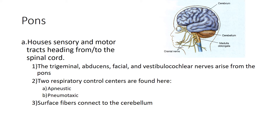Next we have the pons, which is this olive-shaped structure, and this is where we have a lot of sensory and motor tracts going to and from the spinal cord. Many cranial nerves arise from here, such as the trigeminal, abducens, facial, and vestibulocochlear nerves. There are two important centers: the apneustic center and the pneumotaxic center, both involved in breathing.